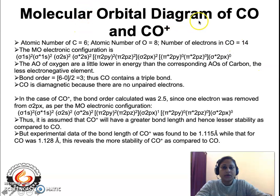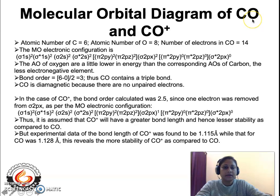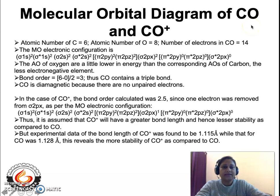Now let us consider the molecular orbital diagram of CO and CO+. With the help of the MO diagram, we will explain the stability, bond order, magnetic properties, and bond length of CO and CO+. The atomic number of carbon is 6 and the atomic number of oxygen is 8, so the total number of electrons in the CO molecule is 14. Oxygen is more electronegative, so its atomic orbitals are shown at a lower energy level.